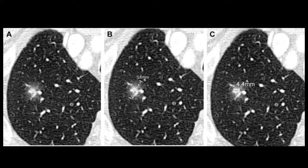This example shows a minimally invasive adenocarcinoma — the same lesion on images A, B, and C. It is a part-solid pulmonary nodule. On image B, the composite transverse dimension measures 18 millimeters. The solid component measured on image C is 4 millimeters. So you would report this as a part-solid nodule measuring 18 millimeters in composite dimension, with the solid component measuring 4 millimeters.